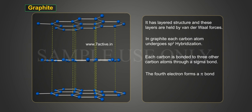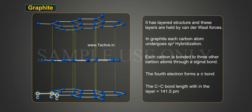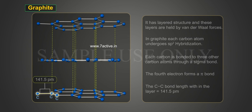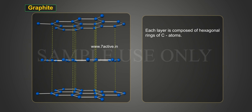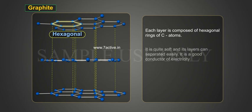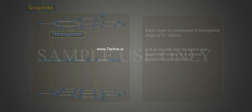Each carbon in graphite is bonded to three other carbon atoms through a sigma bond; the fourth electron forms a pi bond. The carbon-carbon bond length within the layer is equal to 141.5 pm. Each layer is composed of hexagonal rings of carbon atoms. Graphite is quite soft and its layers can be separated easily. It is a good conductor of electricity.